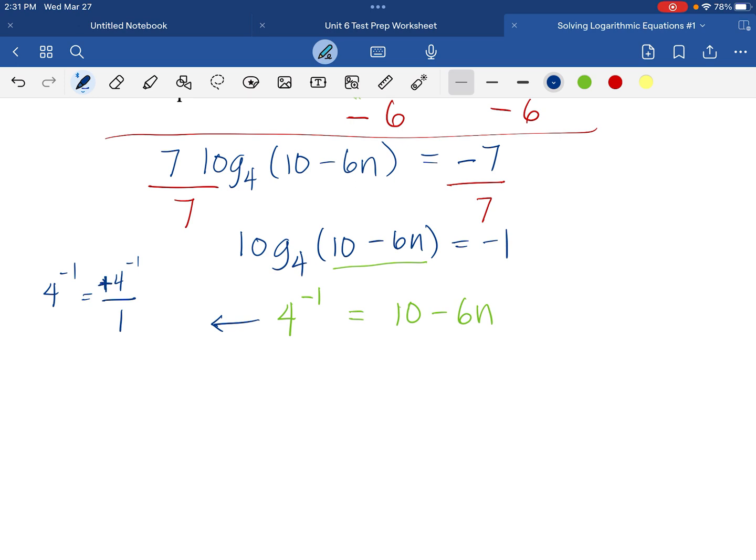Now, to make the exponent positive, we are going to switch or flip our numerator and denominator. In that way, we are able to change the exponent into positive. And so this will turn out to be 1 over 4 to the power 1.